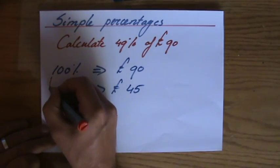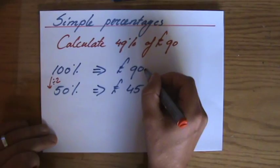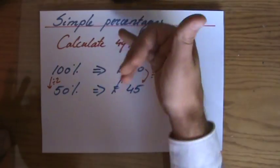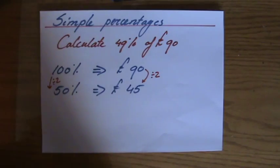Isn't it? Because that is divided by 2, so I divide that by 2. But I'm not talking about 50%, I need 49%. Then I'm going to find out...